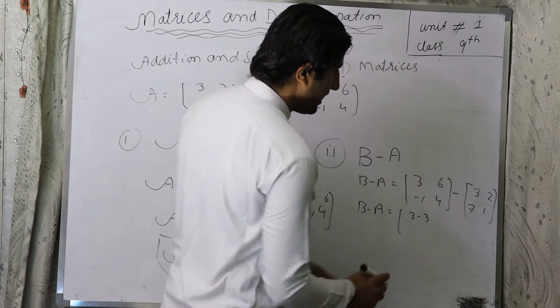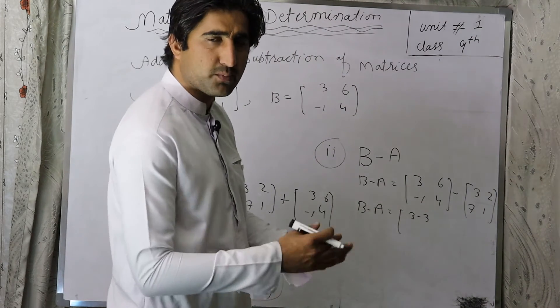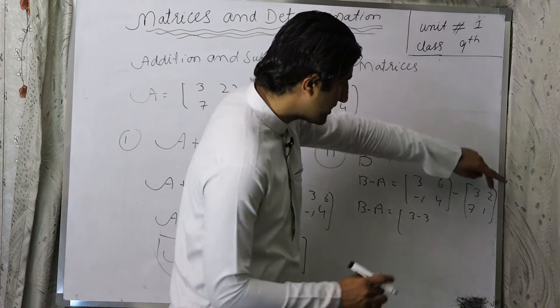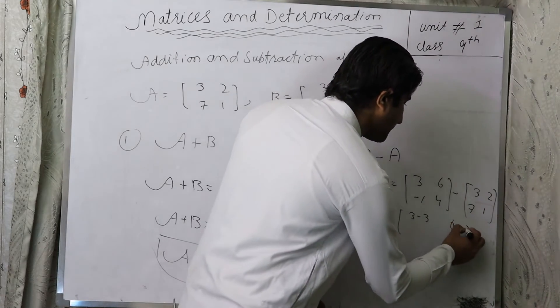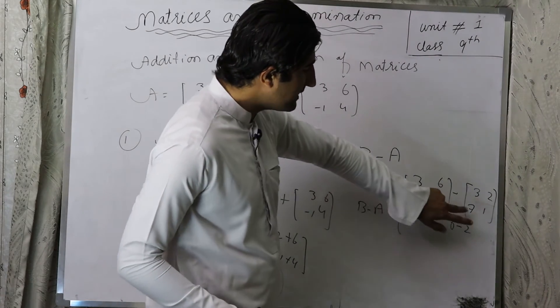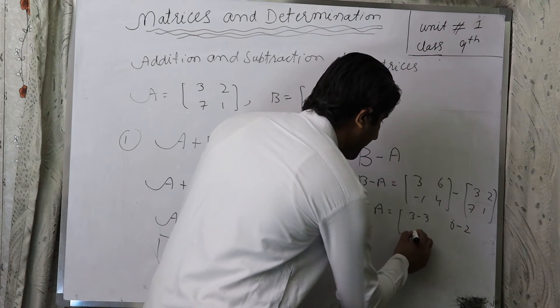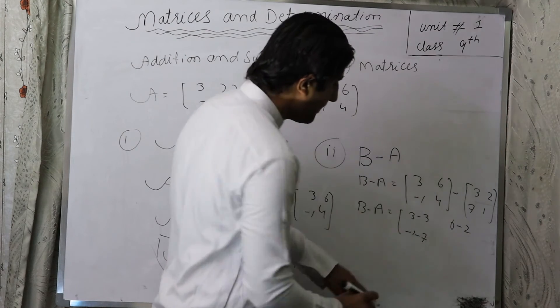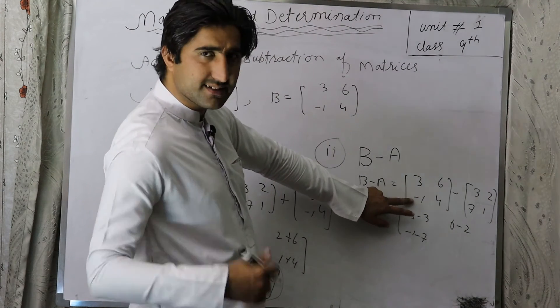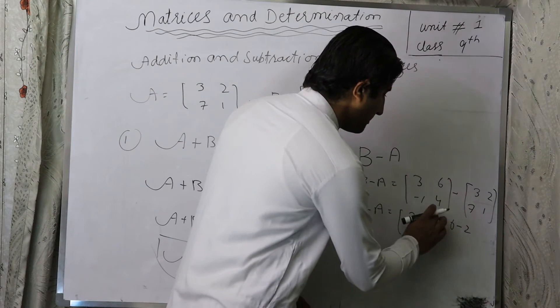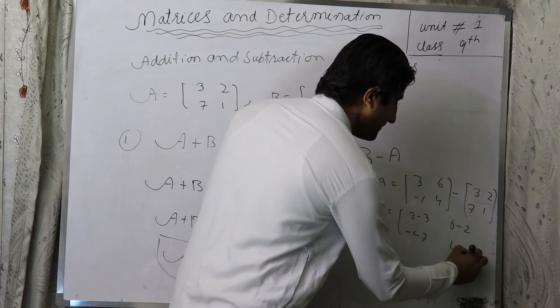Guys, 3 minus 3. Now corresponding element we will do. Now we will get 6 from 2, 6 minus 2. Now we will get minus 1 from minus 7: minus 1 minus 7. Now this is minus formula, and this is minus 1, this is minus value. So now 4 minus 1.